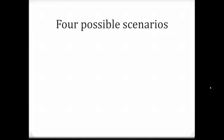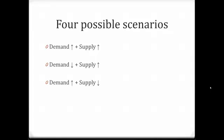When we talk about the simultaneous change in demand and supply, there are four possible scenarios: an increase in demand together with an increase in supply; a decrease in demand together with an increase in supply; an increase in demand simultaneous with a decrease in supply; and the fourth scenario where demand and supply both decrease.